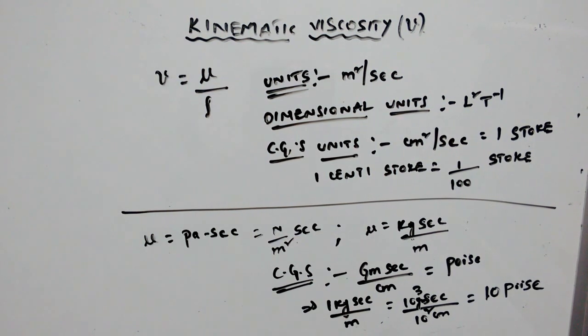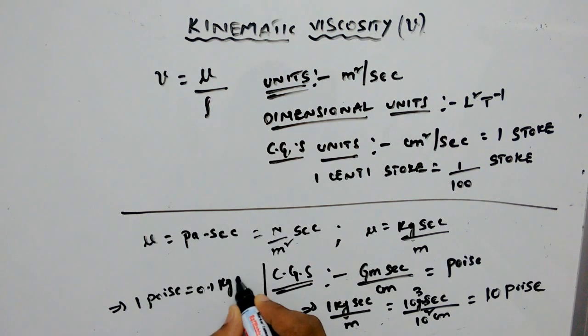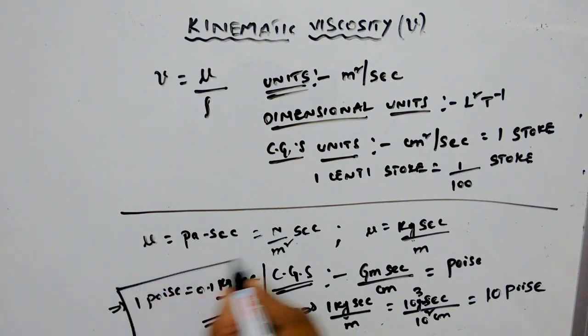second per meter equals 10 poise. One poise equals 0.1 kilogram second per meter. So these...